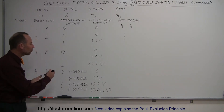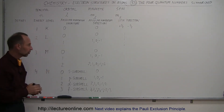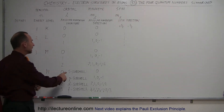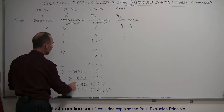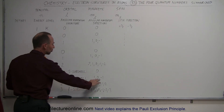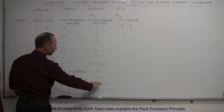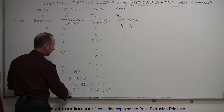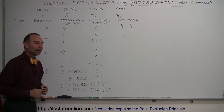In each sub-shell, we have one or more orbitals. In the S sub-shell, there's only one orbital. In the P sub-shell, there are three orbitals. In the D sub-shell, there are five. In the F sub-shell, there are seven orbitals.